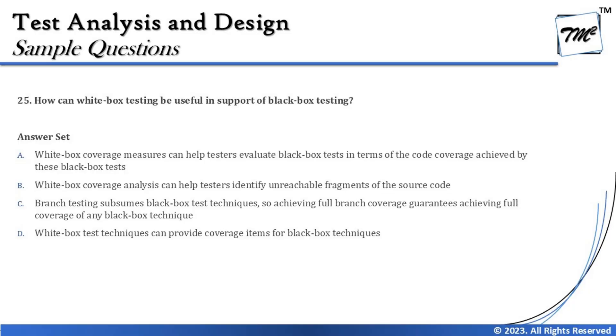Option B says: white box coverage analysis can help testers identify unreachable fragments of source code. While it is a valid statement — unreachable code that black box can't execute, white box can cover — this option has nothing to do with the question being asked. The question is about the relationship between white box and black box, but option B only talks about what white box does on its own.